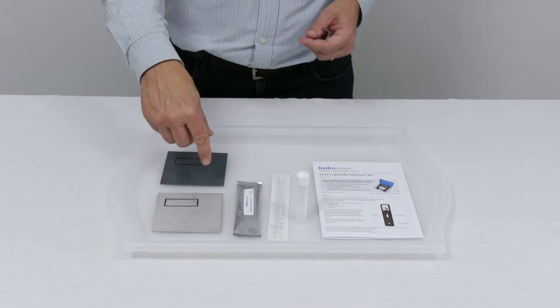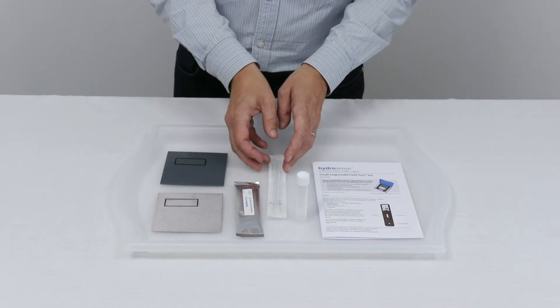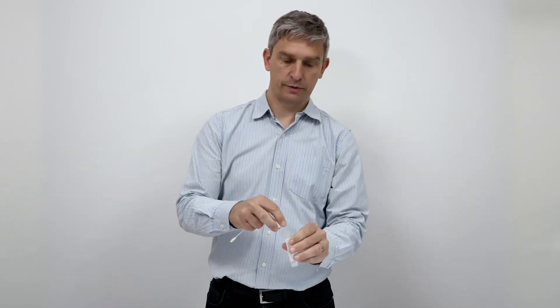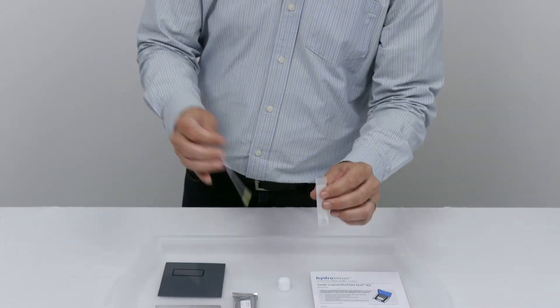If your surface is dry, then you should pre-moisten the swab. To do that, remove the swab from its packaging, open the vial containing the buffer, dip the swab in, remove the excess liquid, and then swab your area.